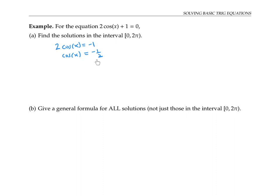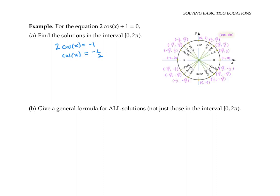Since negative one half is one of the special values on the unit circle, I can use my knowledge of the unit circle to see that the angles between zero and two pi must be either two pi over three or four pi over three. My answer needs to include both of these values. There are no other spots on the unit circle whose cosine is negative one half.